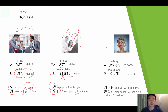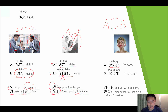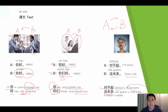Now Conversation 3 is about how to say 'I'm sorry' and how to forgive somebody. When A does something wrong and says sorry to B, then B says that's okay. So A says 对不起, which means 'I'm sorry.' And B replies 没关系, which means 'that's okay' or 'it doesn't matter.' 对不起 is a verb phrase to say sorry, and 没关系 means it doesn't matter.